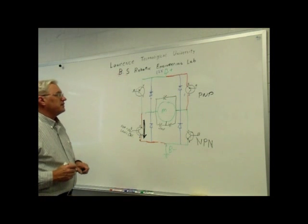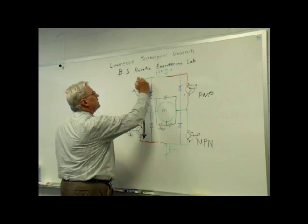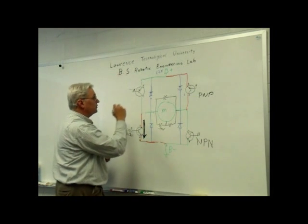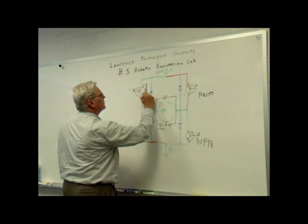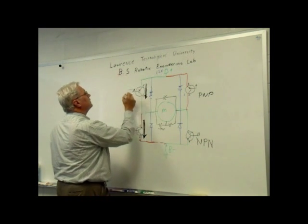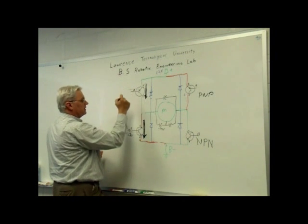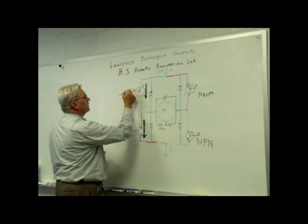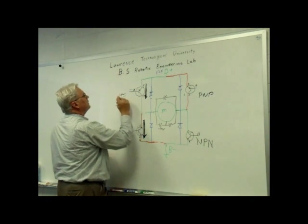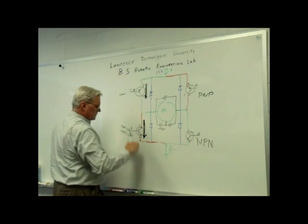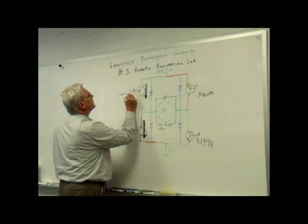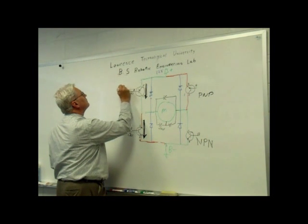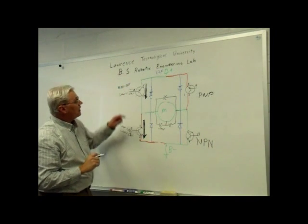Up here, this is a PNP device — it's similar but somewhat different. If I have a small current between the emitter and the base going that way, I turn the transistor on, and I enable a large current through the emitter-collector. So in this case, by pulling this low and enabling the current to flow from my supply through the transistor and down to ground — by pulling this base low, I turn it on. Or if I pull this base high up to my B-plus, I turn the transistor off and there's no current flow.